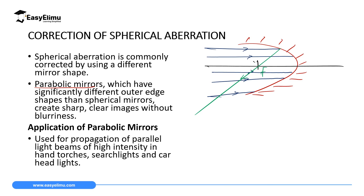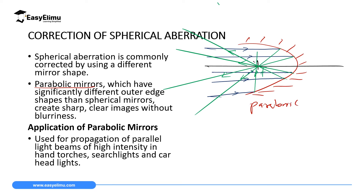Each ray will be reflected to the focal point F. The ray near the axis reflects to F; the next one also reflects to F; the one further out also reflects to F; and even the ray far from the axis will be reflected to the focal point. In this case, the problem of having more than one focal point is eliminated. We have corrected spherical aberration by using parabolic mirrors, since parabolic mirrors are more curved than concave mirrors.